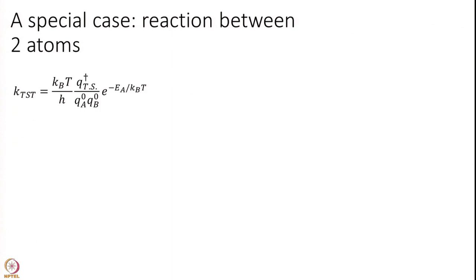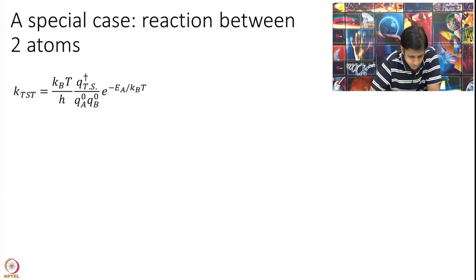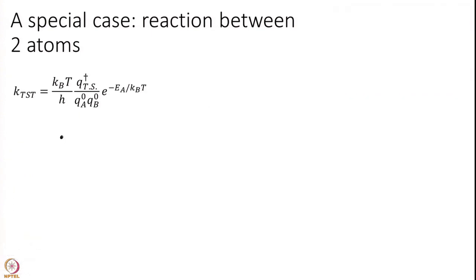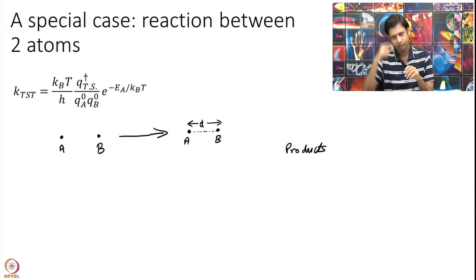The second thing I want to discuss today is an interesting connection between Transition State Theory and collision theory. Let us apply Transition State Theory to a special problem where the reactants are both atoms. So I have atom A and atom B going to some products — I do not even care what the product is. But the transition state let us assume is simply a linear structure with some distance D. A and B come close at some critical distance D which is the transition state.